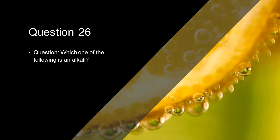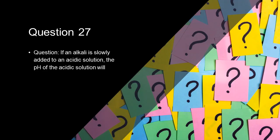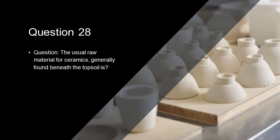Which one of the following is an alkali? Slaked lime. If an alkali is slowly added to an acidic solution, the pH of the acidic solution will increase. The usual raw material for ceramics generally found beneath the top soil is clay.